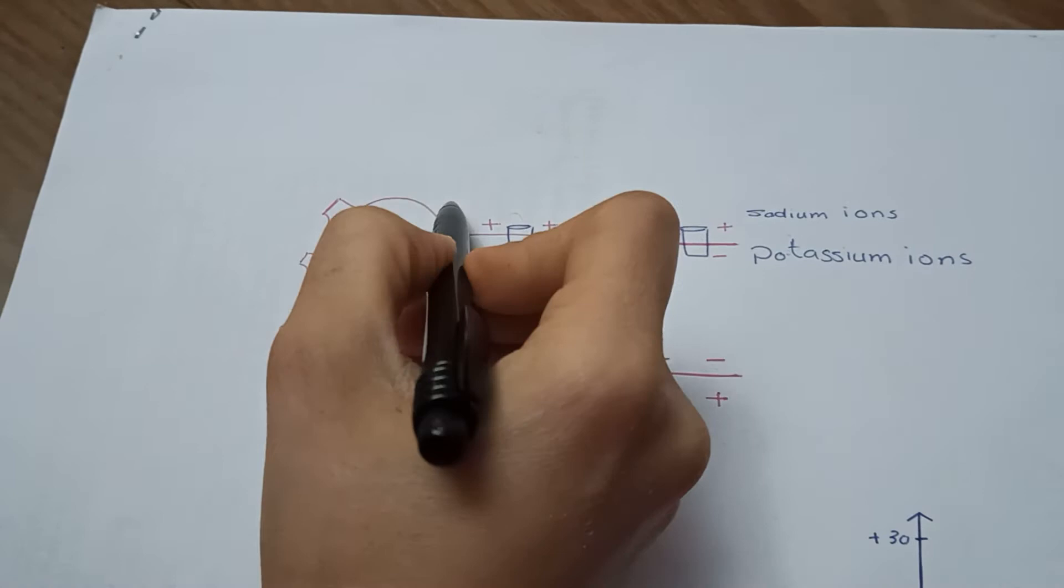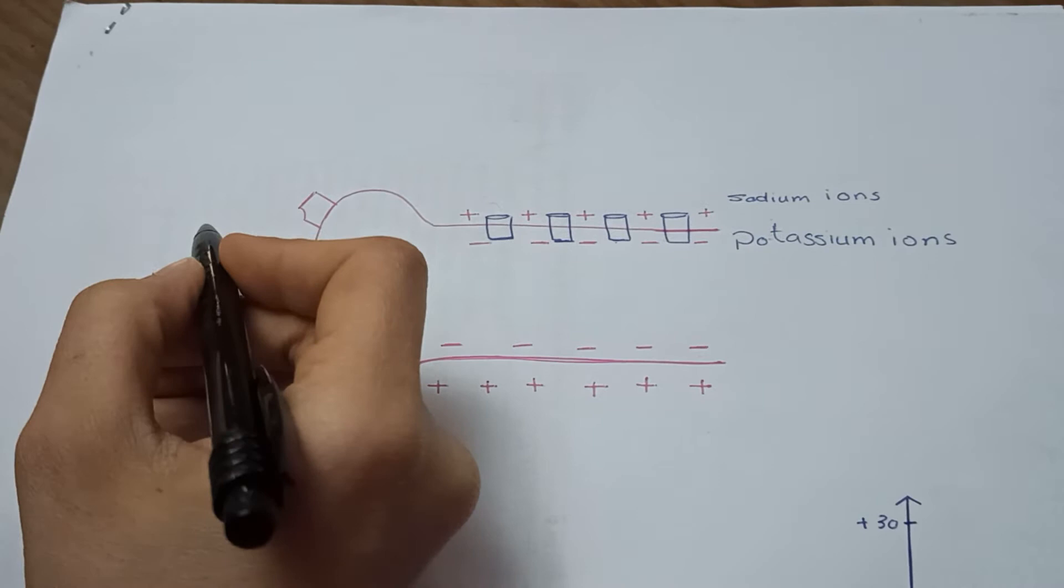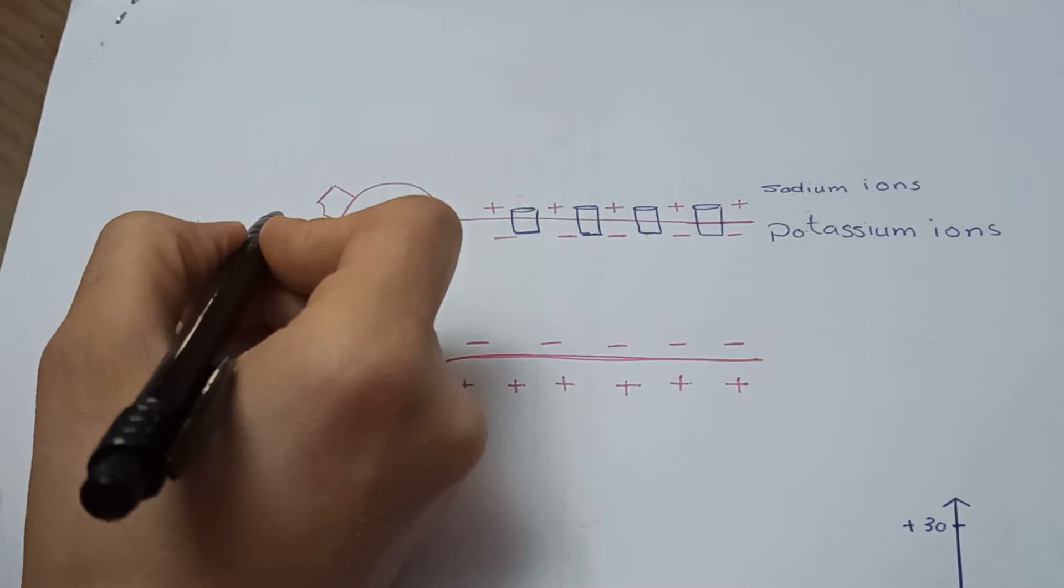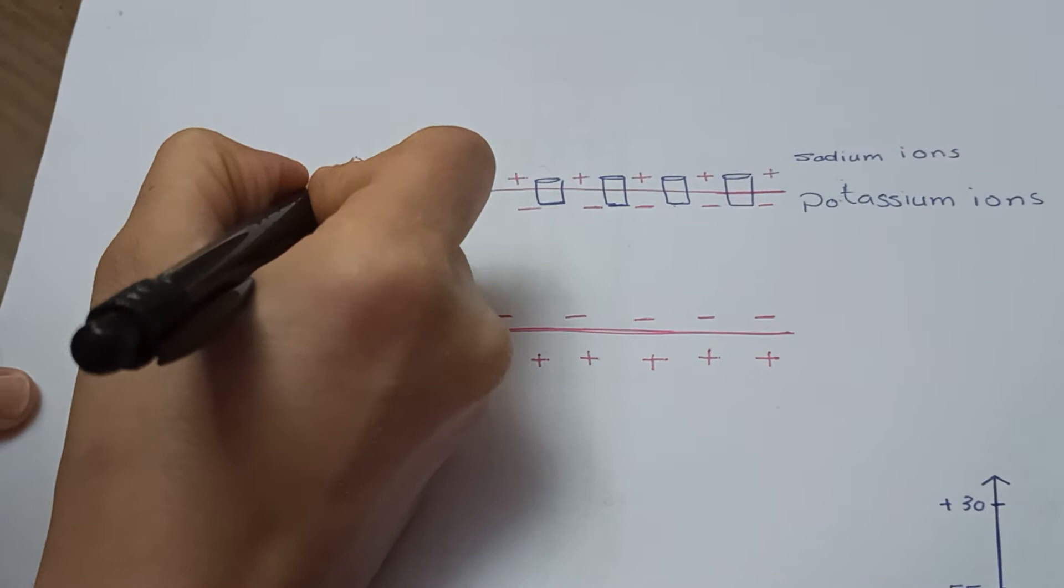When a stimulus is applied, a neurotransmitter is released to its specific receptor, let's say like this part.